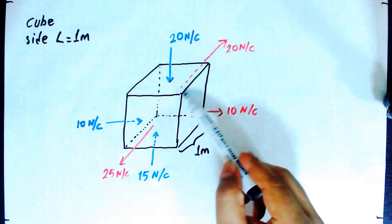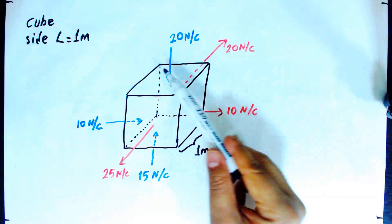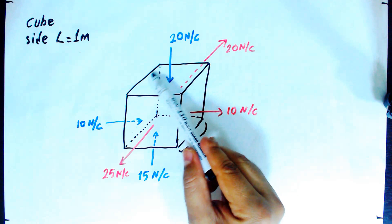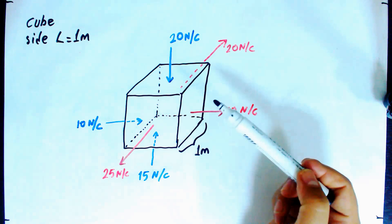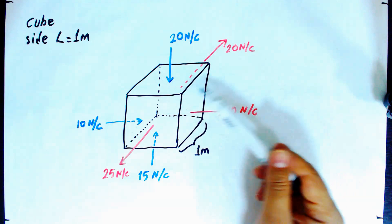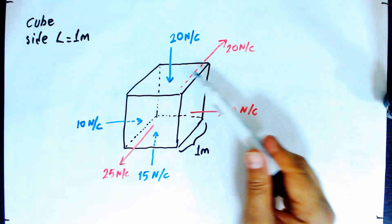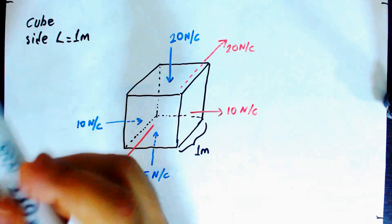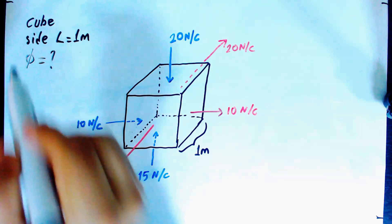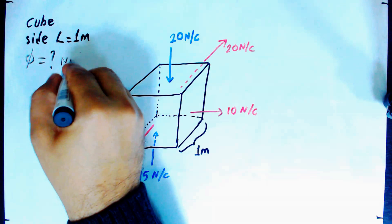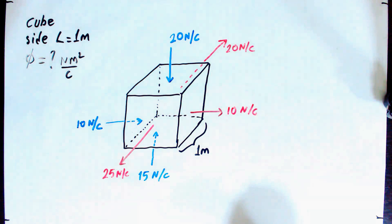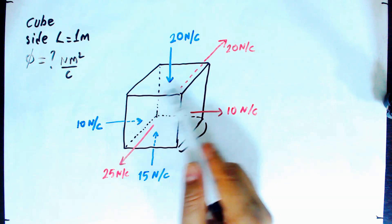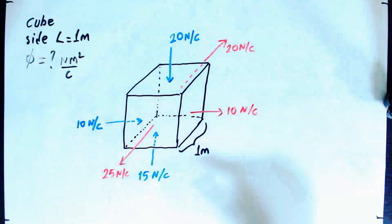All faces are shown with electric fields on the surfaces, and for each surface it's a constant uniform value. For example, for this face the electric field vector is 20 Newton per Coulomb, the same at every point on this face and into the volume. The question is: what is the total electric field flux through this cube of volume 1 cubic meter? Note that the field being uniform per surface does not mean it is uniform throughout all space.